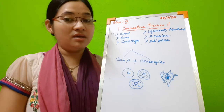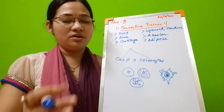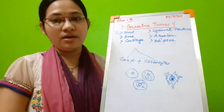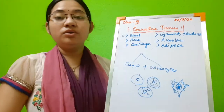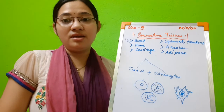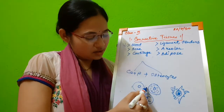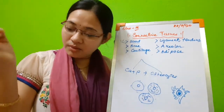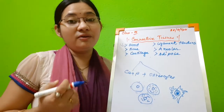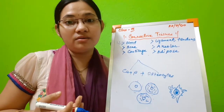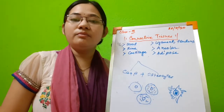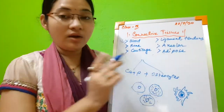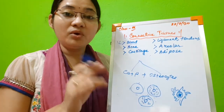Bones are very much living in nature because they have connections of blood and nerve. Although bones are very hard and rigid, they are porous in nature because of the Haversian canals — these spaces make bones porous. If bones were completely solid, they would be very heavy. In birds, bones are highly porous, which is why they can fly easily.